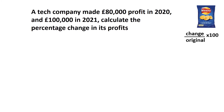Here is our first example of calculating percentage change — it's very important to practice these things. A tech company made £80,000 profit in 2020 and £100,000 in 2021. Calculate the percentage change in profits. We know we're going to use change divided by original multiplied by 100 to get our percentage change.